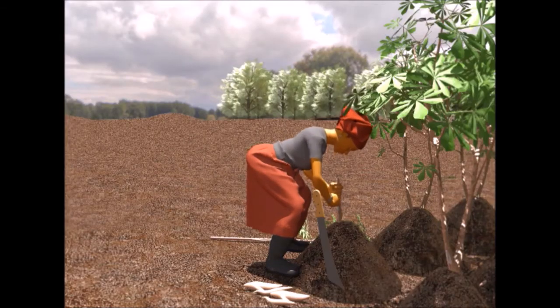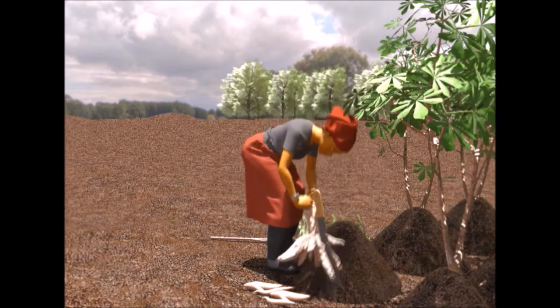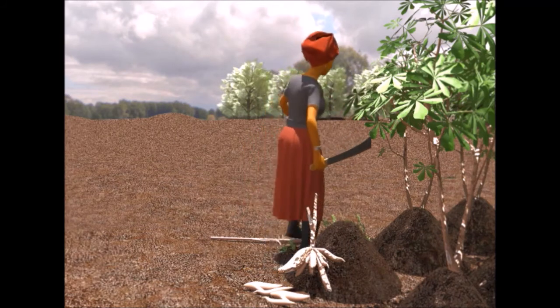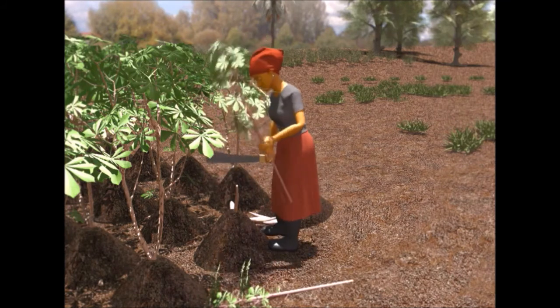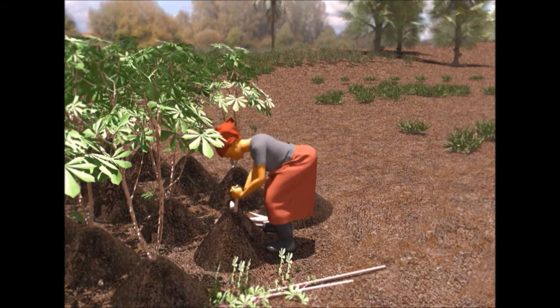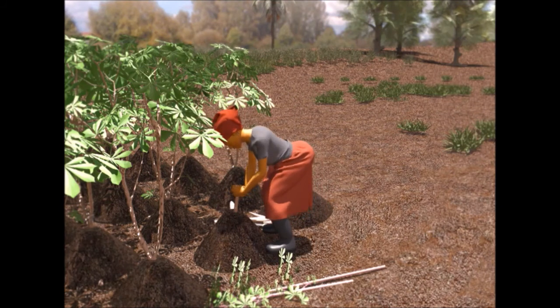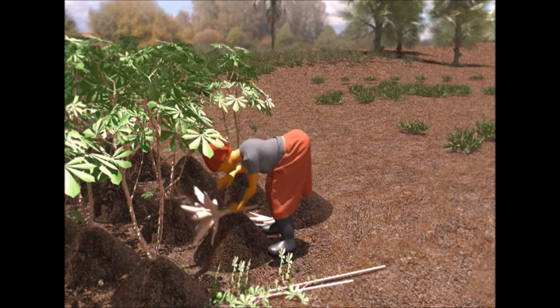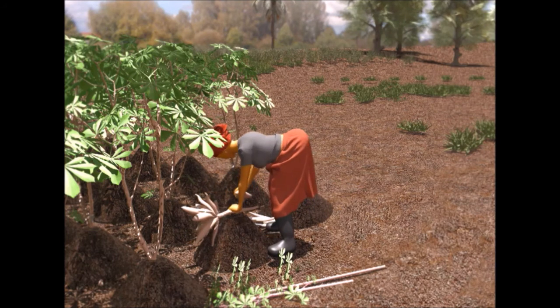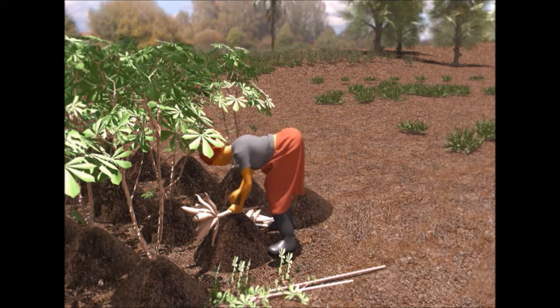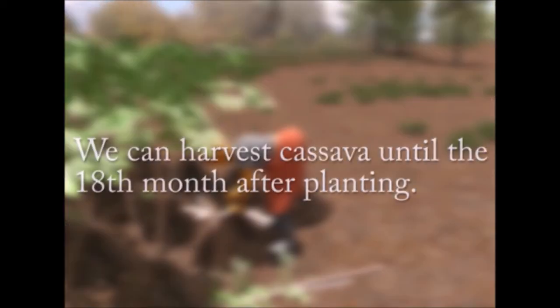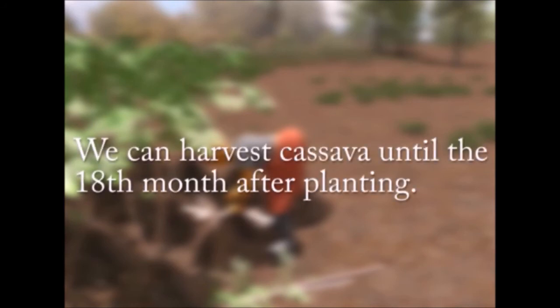We start to harvest cassava roots 10 months after planting, when the soil is moist. To harvest cassava, we cut the stem at the height of my knees with a matchet. Afterwards, we pull out the roots from the soil. We separate the cassava tubers without causing injuries to them to reduce spoilage. We can harvest cassava until the 18th month after planting. I only harvest when I have a market for cassava or other farmers for cuttings.